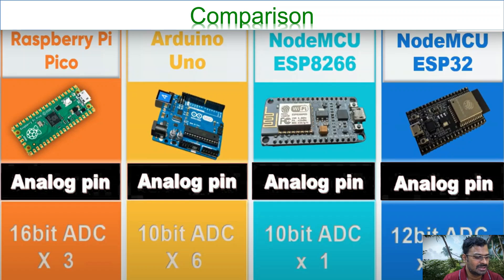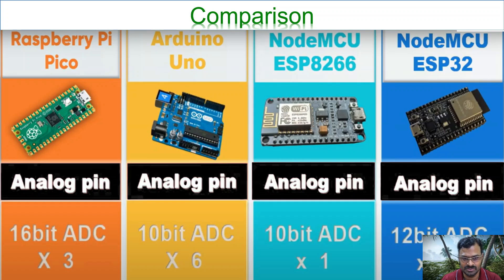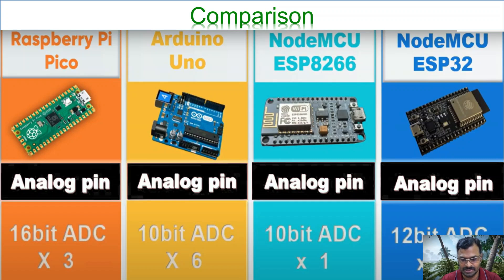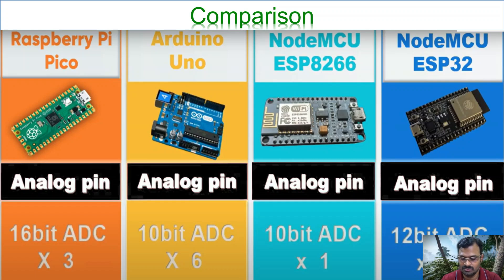Regarding analog pins: Raspberry Pi Pico has 3, Arduino Uno has 6, and NodeMCU ESP8266 has only 1 — which is a major drawback if you need more analog inputs, unless you use an external multiplexer chip. NodeMCU ESP32 has a major advantage here with a 12-bit ADC supporting up to 15 analog channels, making it ideal for analyzing time-varying signals.